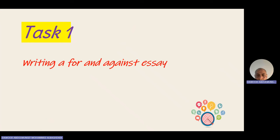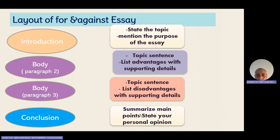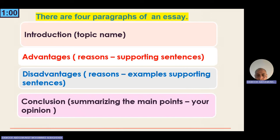The first writing is an advantages and disadvantages essay, or a for-and-against essay. For writing this essay, we must follow these procedures. The first paragraph is the introduction. The second one is advantages. The third paragraph is disadvantages.